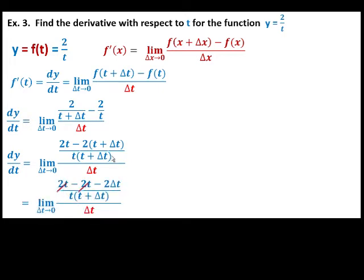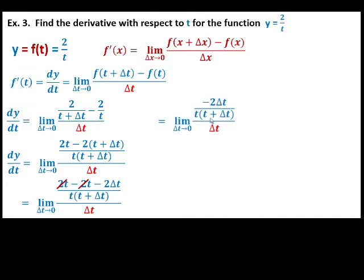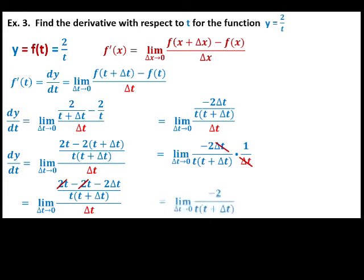Combine similar terms. Then perform the operation of the complex fraction. Cancel out common factors in both numerator and denominator. We can now evaluate the limit of this function as delta t approaches 0. Substitute delta t with 0. And simplify.